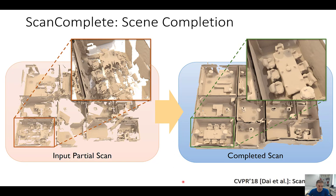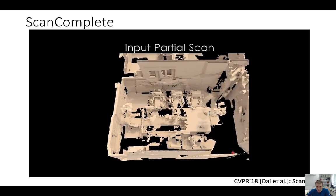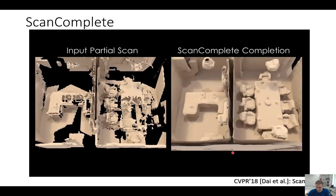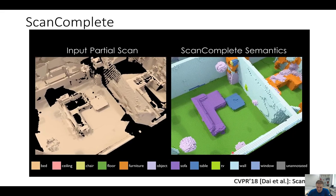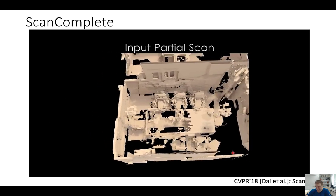This is what we get as output — the partial scan as input, and here's the close-up of a conference room, and the respective completions as output. The architecture is an autoregressive architecture with eight networks having different voxel groups. We train in a coarse-to-fine fashion with a hierarchical prediction. We get quite good results on relatively large scenes — here's the input and here's the respective completion. We also predict semantics in a separate head simultaneously, so we get semantic segmentation as well.